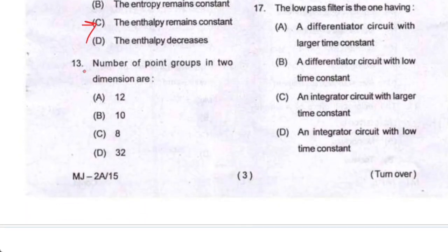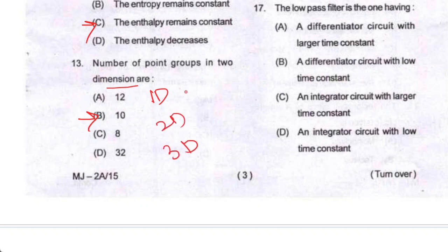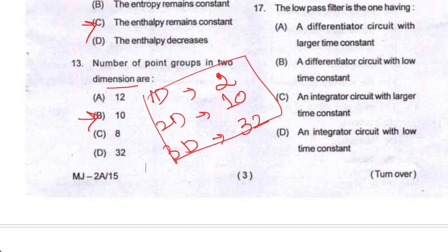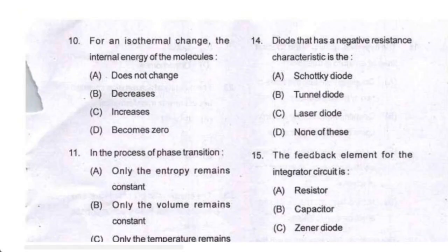Question number thirteen: the number of point groups in two dimensions is 10. Similarly, for 1D and 3D there are different numbers of point groups. So option B is your correct option.